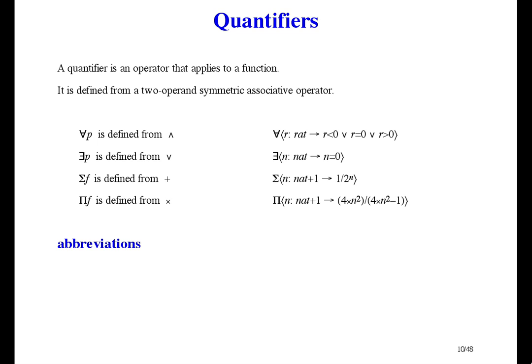There are a couple of slight abbreviations we will use. The first is to stop writing the scope brackets when a quantifier is applied to a function, and to write a raised dot instead of an arrow. I really don't like this abbreviation at all — the scope brackets are useful for showing the scope — but we're bowing to tradition. The tradition is to write the quantifier beside the variable, and the scope is everything to the right, up to a big equals or big implies sign, or the end of the expression, or an enclosing parenthesis.